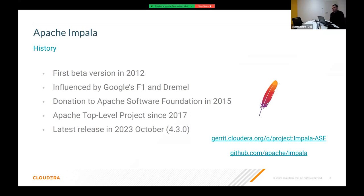The first beta version of Apache Impala was released in 2012 and was managed by Cloudera. Impala was a product of Cloudera and was mainly influenced by Google's F1 and Dremel. The scope was to create an open-source alternative for Google's products. Later the project was donated to the Apache Software Foundation and became a top-level project in 2017. The latest version, 4.3.0, was released this month.